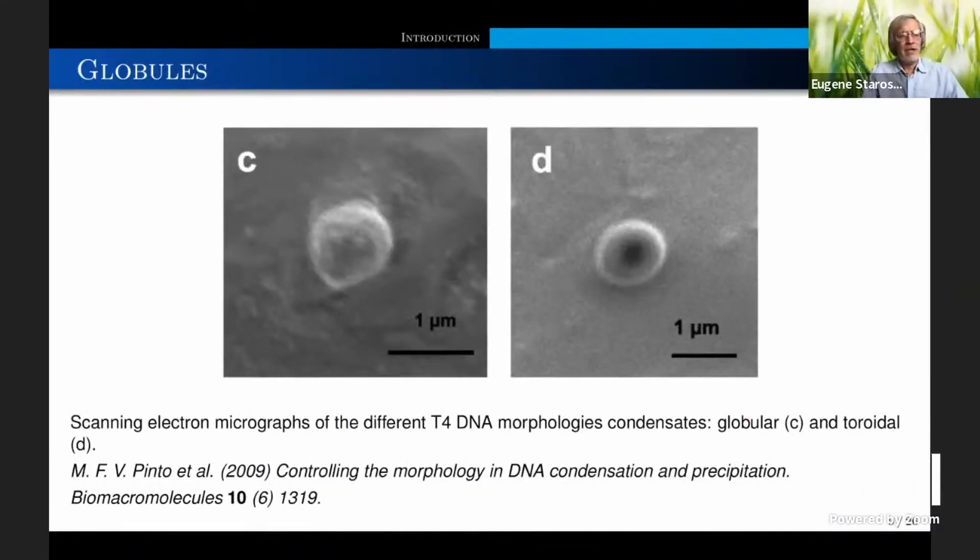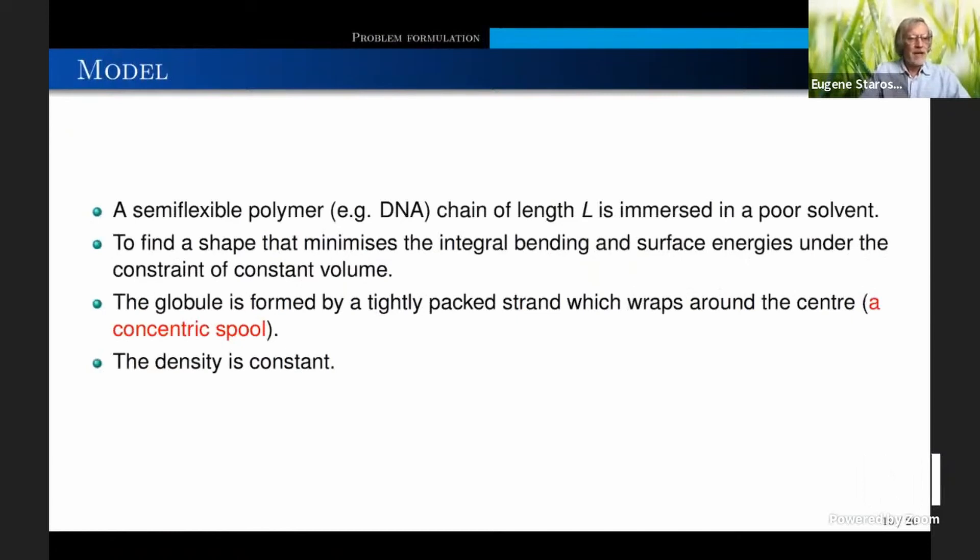Toroids are not only the shapes that have been observed. Here is the example of so-called spherical globule, which is not a toroid, so there is no hole. We don't know actually what is in the core, in the center. But still, there are several papers that describe the spherical or globular configurations of condensate. That is another fact. I am going to present a model that actually pretends to be more universal that describes both shapes. There are different toroidal shapes and also spheroidal shapes, which can show the variation of the shape depending on the parameter.